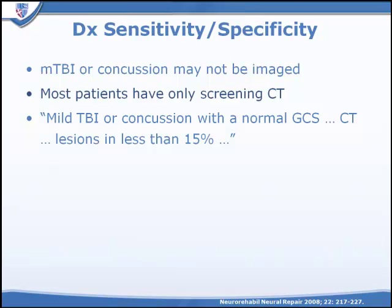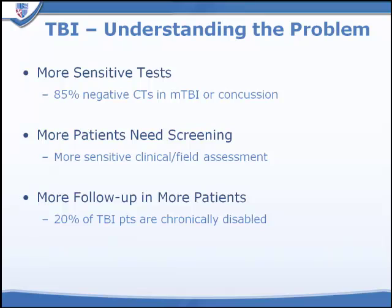Mild TBI has a variety of definitions that are still evolving. Patients who have mild TBI or what we used to call concussion typically do not get neuroimaging done. When they do have imaging done, the CT scan is typically normal in about 85% of patients — not because they are normal, but because the lesions are below the threshold of detectability on computed tomography. We need to consider using more sensitive tests, imaging more patients, and doing follow-up examinations on a larger percentage of patients.